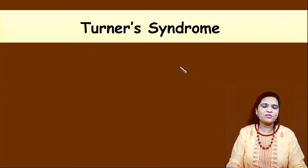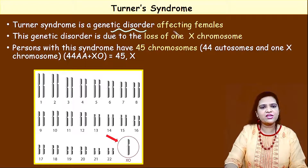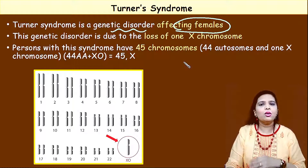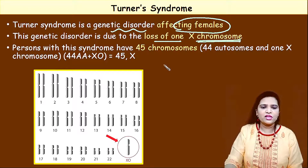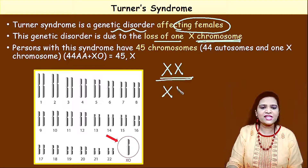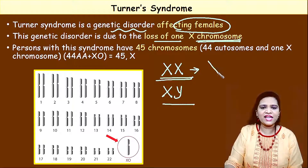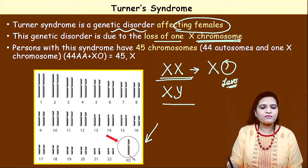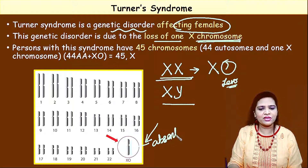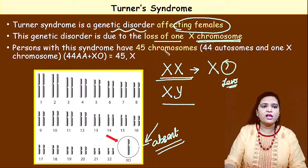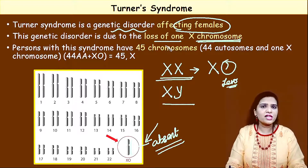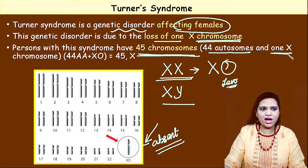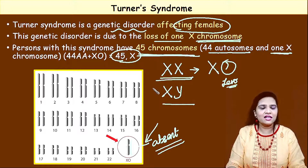Let's move on to Turner syndrome. Turner syndrome is a genetic disorder that affects only females. Klinefelter syndrome affects only males, while Turner syndrome affects only females. This is due to loss of one X chromosome. Generally a female has two X chromosomes, but in this patient only one X is present — the other copy is absent, denoted as X0. Looking at the karyotype, only one X chromosome is present. So this female has 44 autosomes and only one X chromosome — the total is 45 chromosomes. The genotype is 45X.